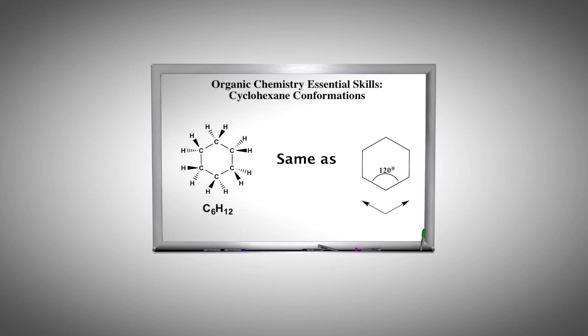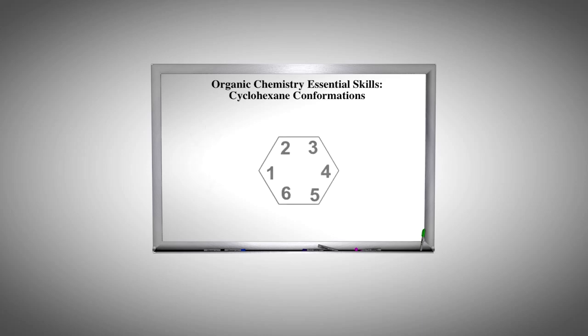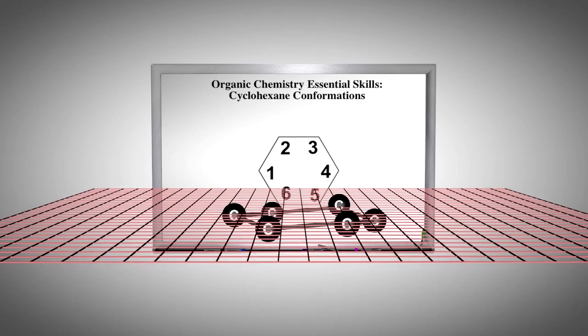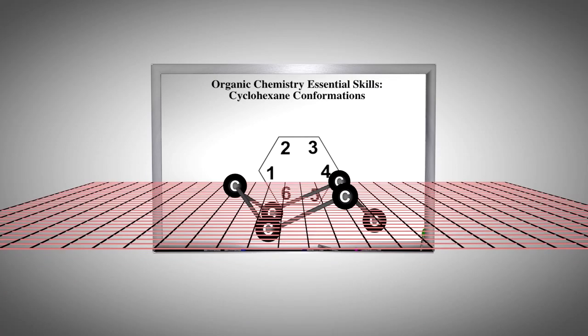Thus, the ideal angle for each carbon should be 109.5 degrees. The 109.5-degree ideal angle is accomplished by folding the molecule into three dimensions as shown. The ring is puckered out of the plane.